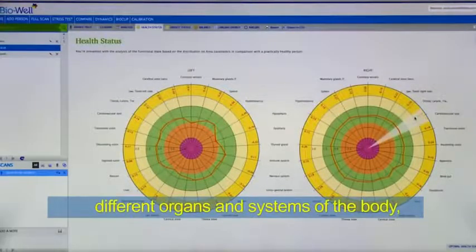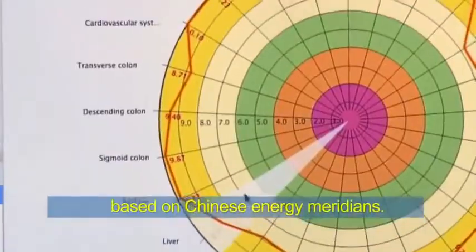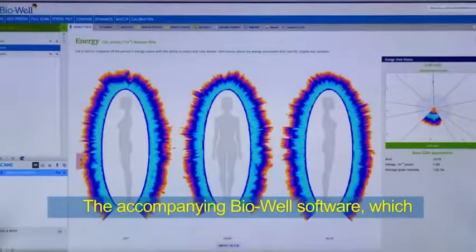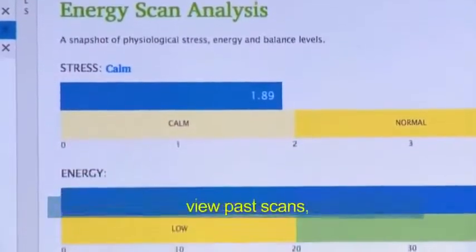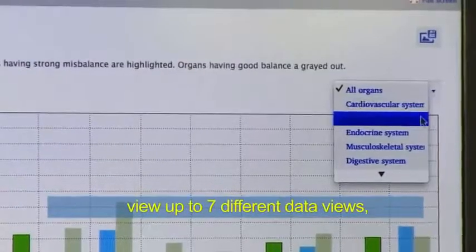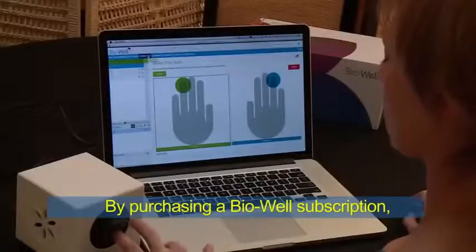The images are then mapped to different organs and systems of the body based on Chinese energy meridians. The accompanying BioWell software, which can be downloaded from the BioWell website, allows a user to perform scans, view past scans, view up to seven different data views, print reports, and much more.